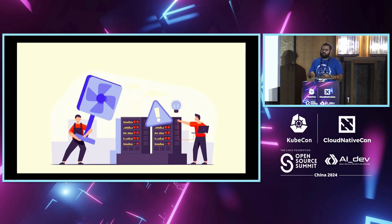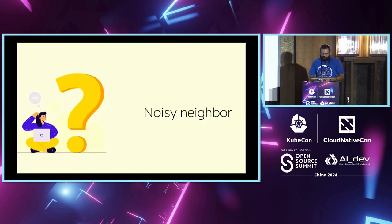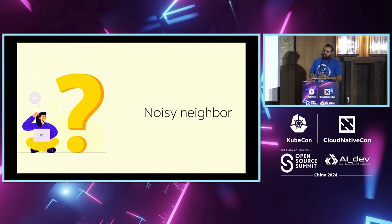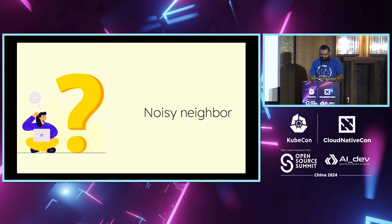Speaking of production, there are two very old problems that continue to remain problems today. The first is apps that take away too many resources and cause trouble to other apps — you basically handle them with bad affinity rules and things like that. But there are also ways in which they threaten to weaken the entire system. You need to work on policy and other things to mitigate these problems.